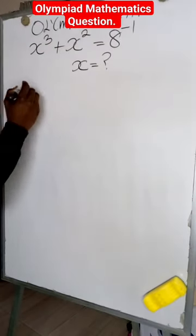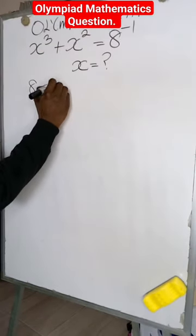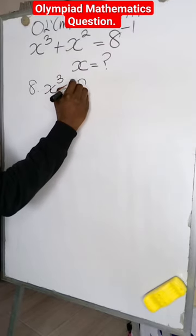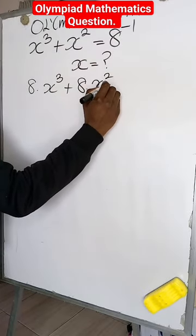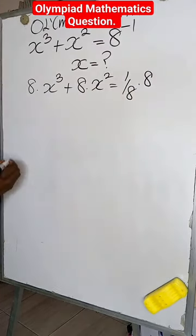To find the value of x in this exponential equation, we'll multiply all 2 by 8, and that will give me 8 multiplied by x squared, and this will equal to 1 divided by 8 multiplied by 8.